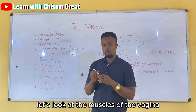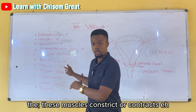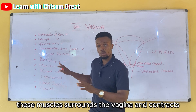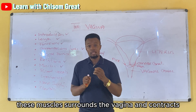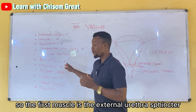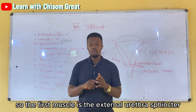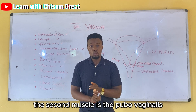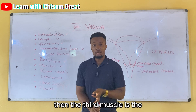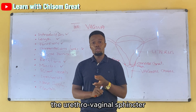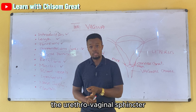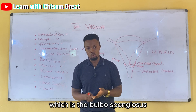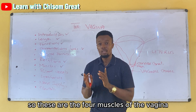The muscles surrounding the vagina constrict and contract. The four muscles of the vagina are: the external urethral sphincter, the pubovaginalis, the urethrovaginal sphincter, and the bulbospongiosus.